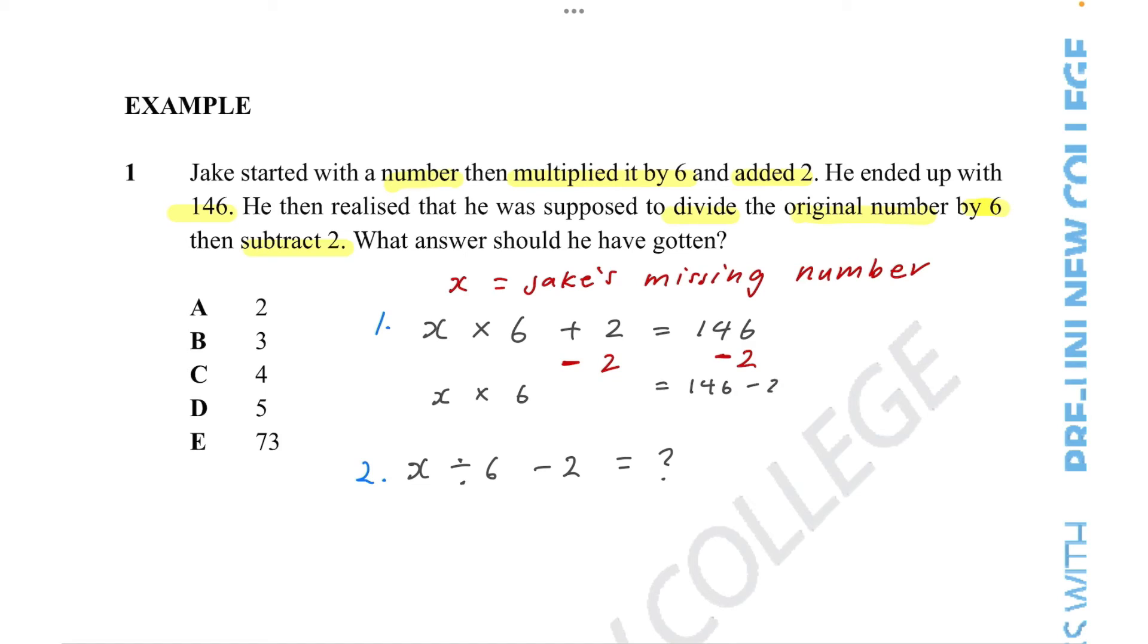And 146 minus 2, which equals 144. Now we need to get rid of the times 6. In order to do this, once again, we divide it by 6. And then we have to divide it by 6 on the other side. So now times 6 divided by 6 is 0. So we just get x. And that equals 144 divided by 6.